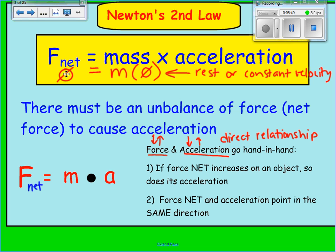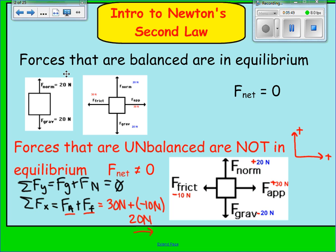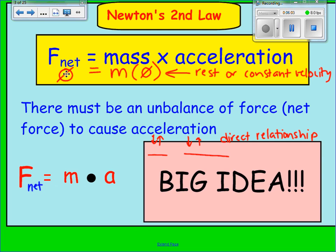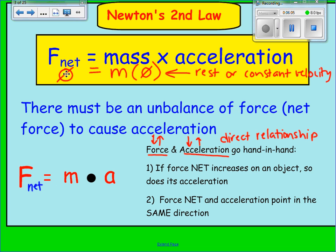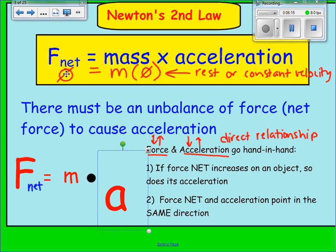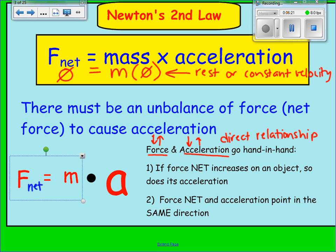That also works for direction: whatever direction the net force is going is the same direction acceleration is going. Going back to the previous example, the net force was 20 newtons to the right, which means acceleration is also to the right. Force and acceleration have a direct relationship.